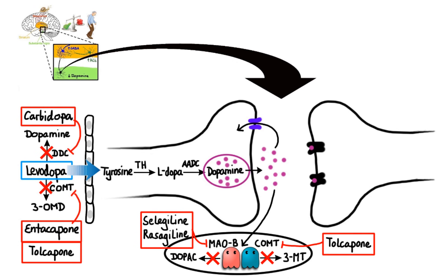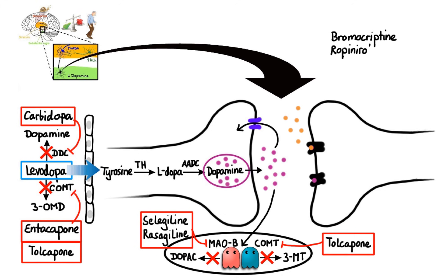Unfortunately, because Parkinson's is a progressive disease, the number of dopamine-producing neurons decreases over time and fewer cells are capable of making dopamine. Taking that into consideration, some drugs have been developed to mimic dopamine and directly stimulate dopamine receptors in the brain. Drugs that belong to this class include bromocriptine, ropinirole, pramipexole, rotigotine, and apomorphine.